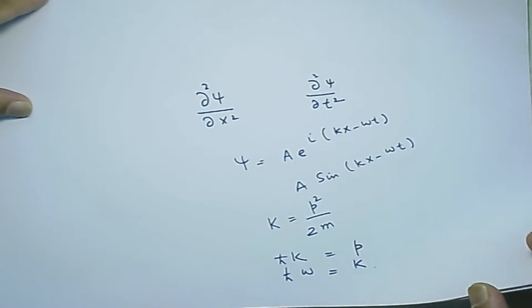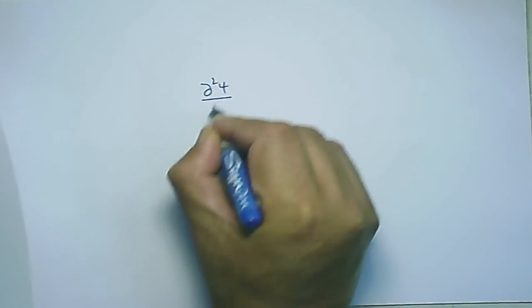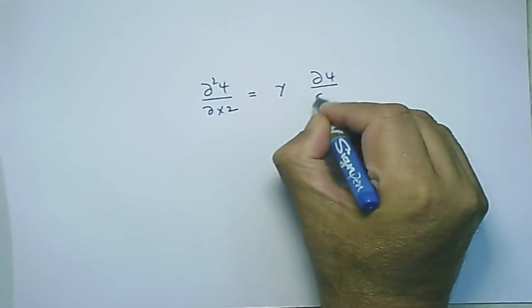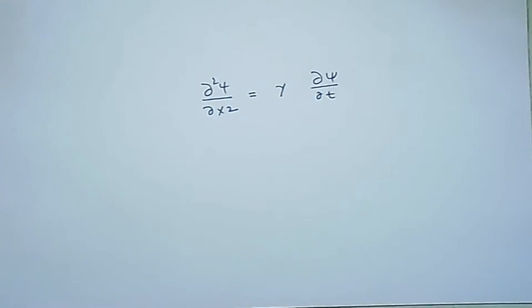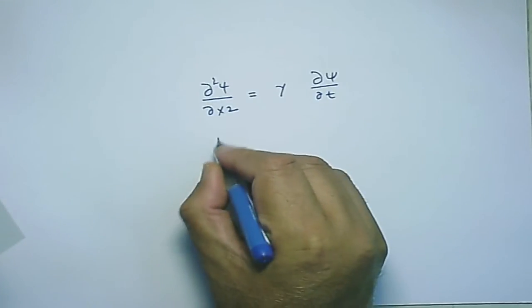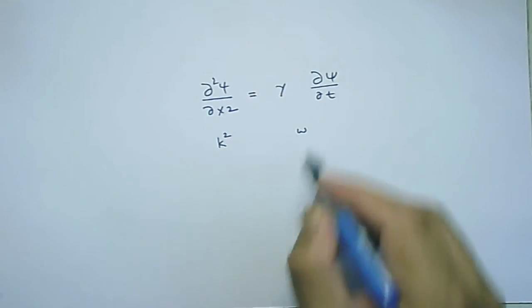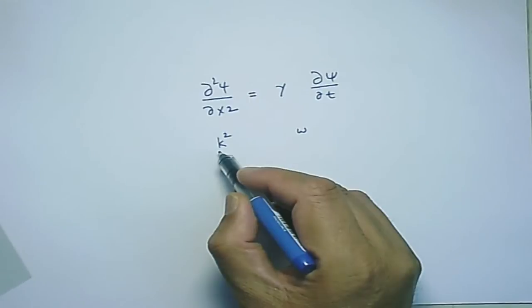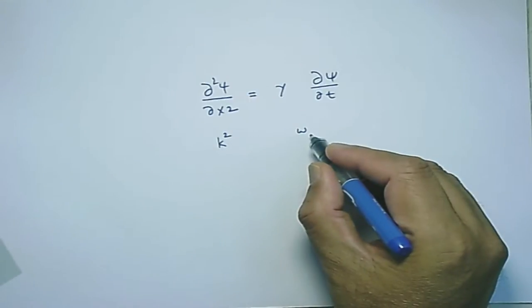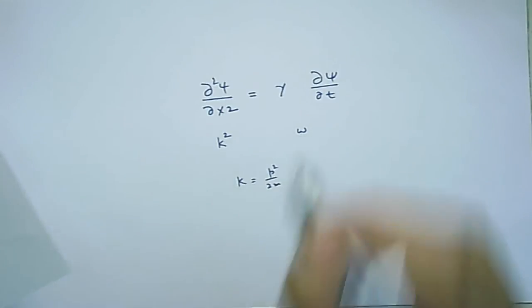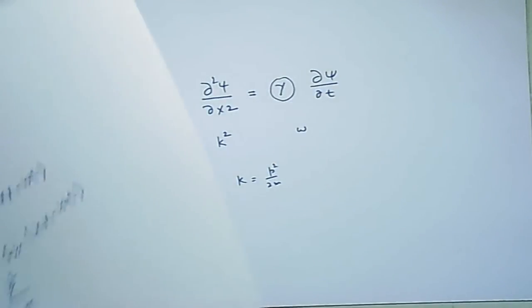With this trial equation, taking the second derivative with respect to x gives k², taking only the first time derivative gives ω. Since ω is related to energy and k is related to momentum, and kinetic energy equals p²/2m, the k factors will cancel and γ will become independent of dynamical properties. So let us try this type of equation.